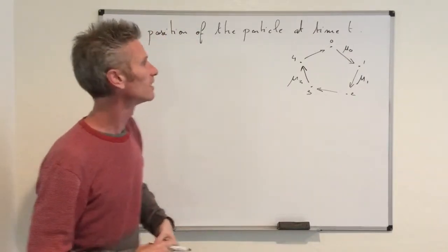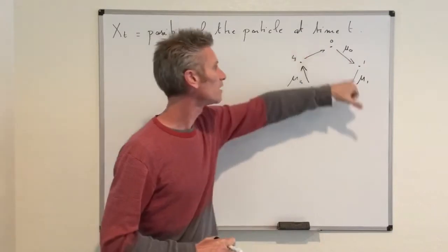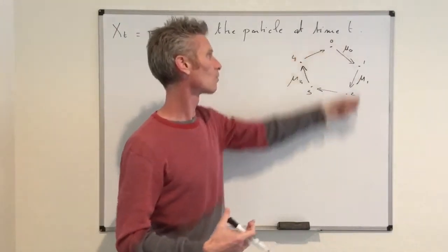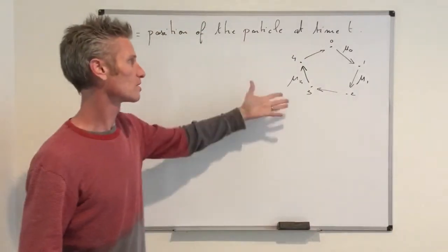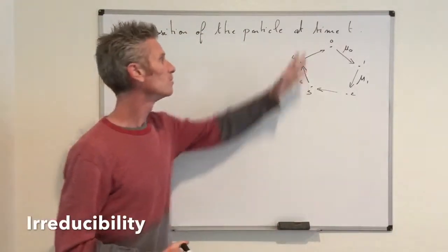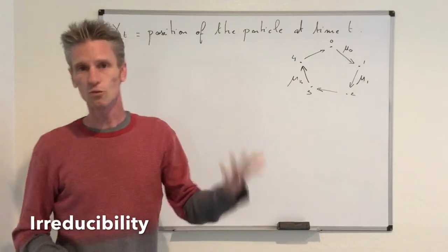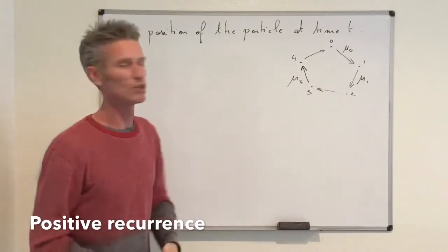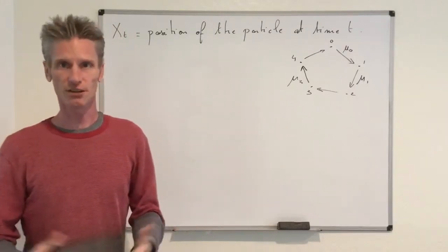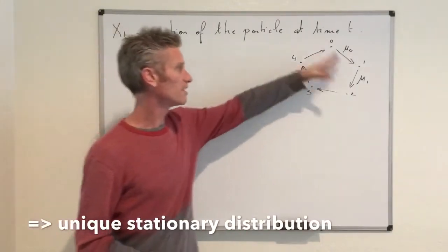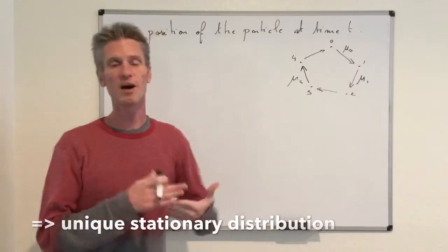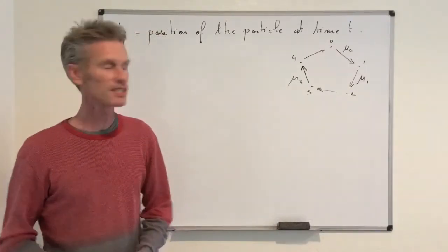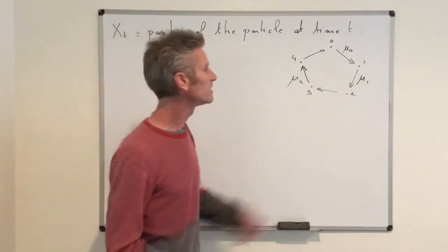We can clearly see that the directed graph is a directed cycle going around all the vertices, so the process is irreducible. Because the state space is also finite, we deduce it is positive recurrent, and the theory of Markov chains tells us there must be a unique stationary distribution. To find it, we need to solve πQ = 0, where Q is the intensity matrix.